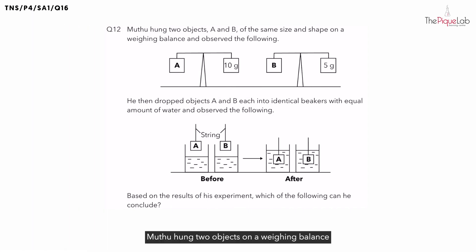Question 12. Mutu hung two objects, A and B, of the same size and shape on a weighing balance and observed the following. Let's recap. What does a weighing balance measure? A weighing balance measures mass and we can tell which object is heavier as the weighing balance will tilt downwards towards the heavier object. However, for both of the diagrams here, we notice that the lever balances are balanced and not tilting downwards towards any of the objects.